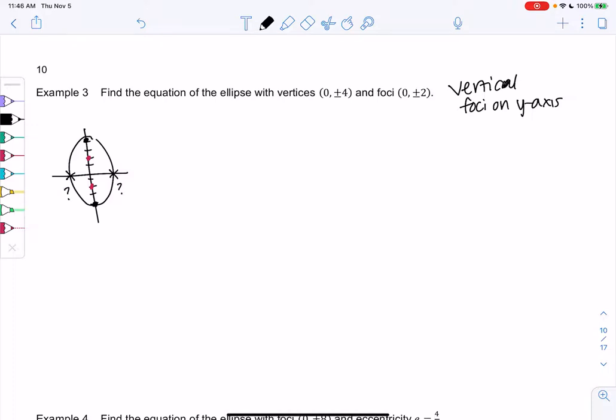We'll have x² over b² plus y² over a² equals 1. The y² gets the a² because the foci are on the y-axis. So we know a is equal to 4 from the vertices, and we know c is equal to 2. And we can just again use that formula to find b.